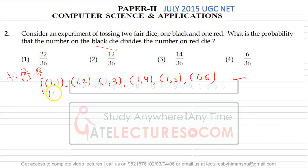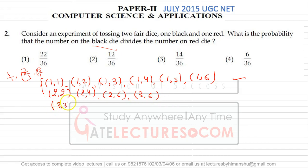Second set of possible ways: 2,2 — 2 divides 2; 2,4 — 2 divides 4; 2,6 — 2 divides 6. Then 3,6 — 3 divides 6. Then 3,3 — 3 divides 3; 4,4 — 4 divides 4; 5,5 — 5 divides 5; and 6,6 — 6 divides 6. Every number divides itself.